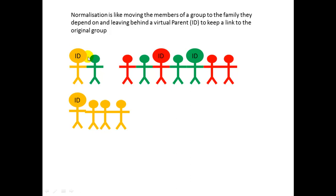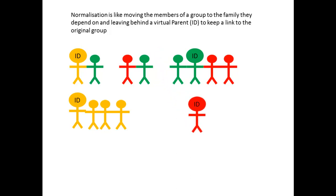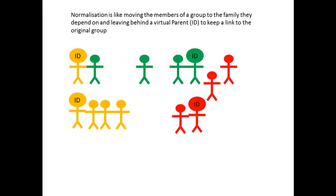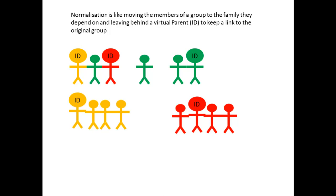We have to leave a virtual clone of the parent that we took away back into the old group. Now let's take the red family away into its own separate little group. There's the parent and now following the children — the dependents — they depend on that parent. As we said before, we have to leave a copy of the parent back into the old family.